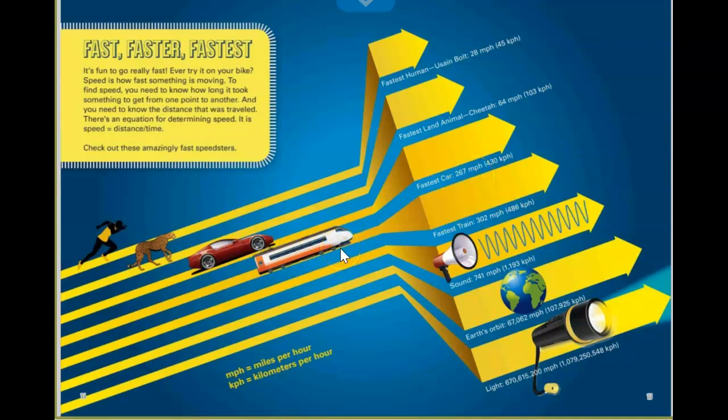The fastest car can go 267 miles per hour. Wow, that's really fast. The fastest train can go over 302 miles per hour. And this train actually uses magnets. The fastest is sound. Sound actually travels 741 miles per hour. That's really fast. Earth's orbit goes around at 67,062 miles per hour. It's incredible that we don't feel it moving. Light travels faster than anything. 670 million, 615,200 miles per hour. That's really fast.